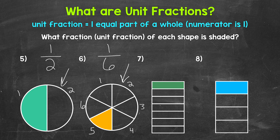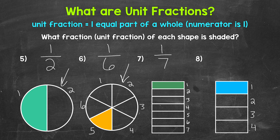Let's move on to number seven. The whole rectangle has been divided into one, two, three, four, five, six, seven equal parts. So our denominator is seven, and one of the equal parts is shaded. Our unit fraction here is one seventh. Moving on to number eight, the whole has been divided into four equal parts, so four is our denominator. One equal part is shaded, so our numerator is one. Our unit fraction for number eight is one fourth.